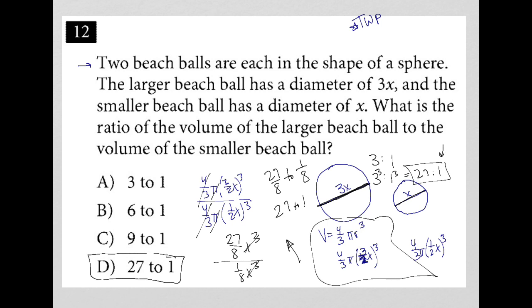The same also works for area. That wouldn't be for a three-dimensional shape, of course. That'd be for a two-dimensional shape. But if these were just circles that we were talking about, and the question was to ask, you have a diameter of 3x for one circle, the diameter of x for another circle. What is the ratio of the areas? It would just be the square, right? So it would turn from 3 to 1 to 9 to 1.